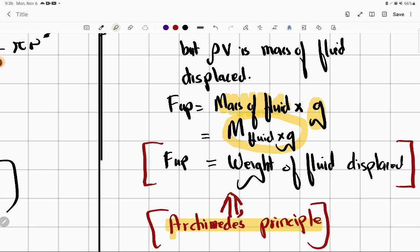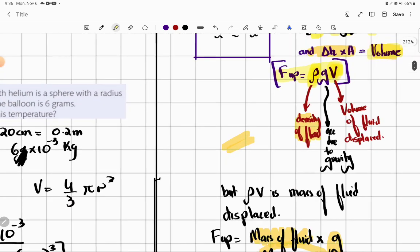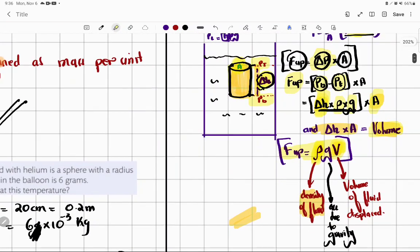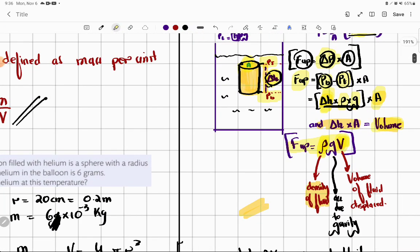Do you understand? If any object's weight is greater than upthrust, which is weight of fluid displaced, it will sink. Now copy this entire derivation from here to here.